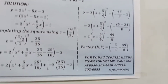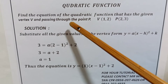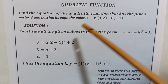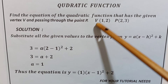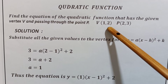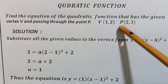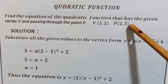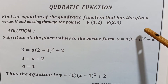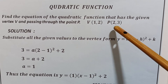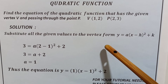For the last problem, the third problem, we are asked to find the equation of the quadratic function that has a given vertex V and passes through the point P. V is equal to (1, 2) — x and y coordinates 1 and 2 — and P is (2, 3).